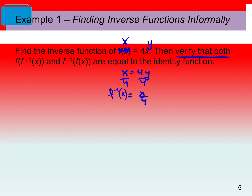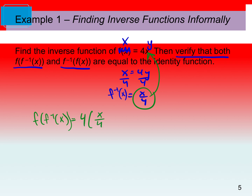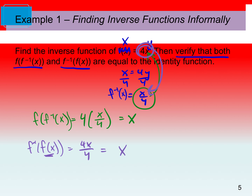It says to verify that both f(f⁻¹) and f⁻¹(f) are equal to the identity function. For f of f inverse: I take the inverse and plug it into x in my f function, giving me 4 times x/4, which simplifies to 4x/4 = x. Now for f inverse of f: I take f(x) = 4x and plug it into the inverse, giving me 4x/4, which also simplifies to x. Because we get the identity function for both, we can say yes, they are inverses.